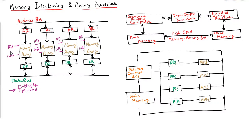For each memory there will be two inputs: read and write. Whatever data is in the data register, if you want to write then we will enable the write input so the data will be stored into memory. Whatever data we want to read, the address will be stored into the address register and then the read pin will be enabled, so data will be available via the data register. Every communication will take place using the data register and address register.